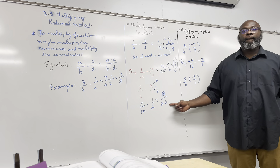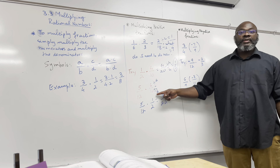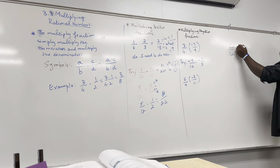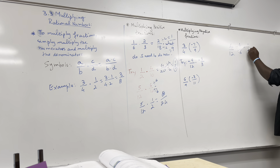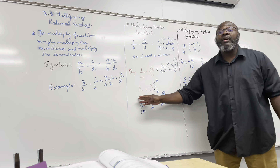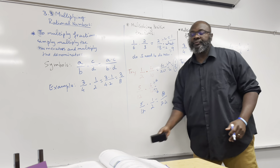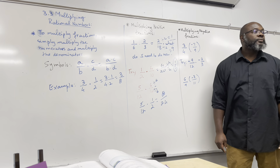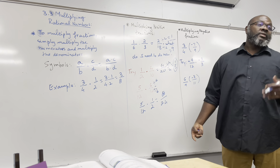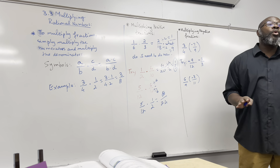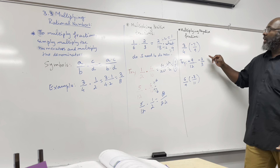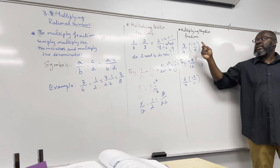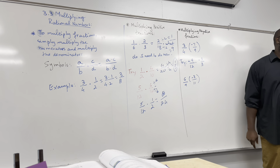Two over 18 is basically one over nine. Now try this: one over two times four over ten. One times four is four, and two times ten is 20. What's the biggest number that goes into four and 20? Four. Divide by four — you get one over five.